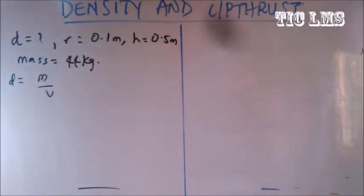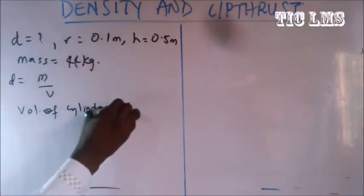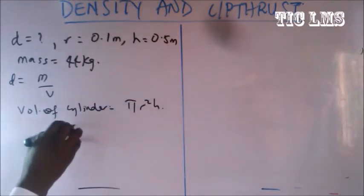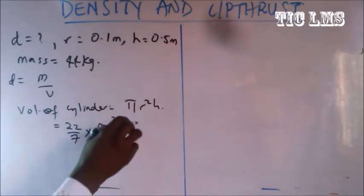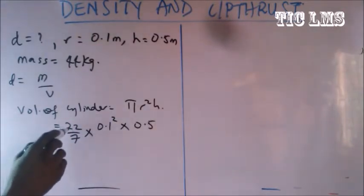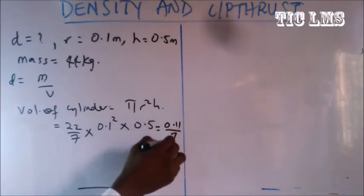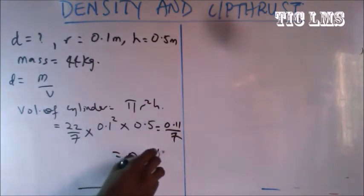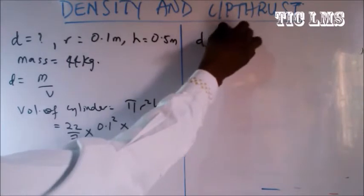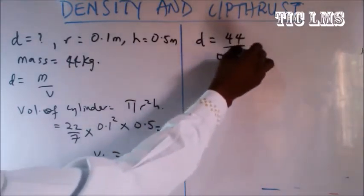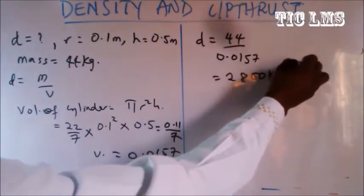We know density equals mass over volume. We are given the mass but need to find the volume of the cylinder. Volume of a cylinder equals pi r squared h, which is 22/7 times 0.1 squared times 0.5. This gives 0.11 divided by 7, which equals 0.0157 m cubed. So density equals 44 over 0.0157, which gives 2800 kilogram per meter cubed.